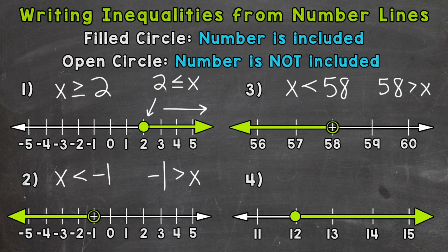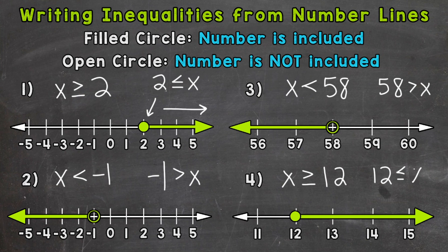And lastly, number four — we have a filled circle above 12, so 12 is going to be a solution. We have an arrow pointing to the right, so we want all of the numbers greater than 12 to be represented as solutions within our inequality. So we write x, and x is going to be greater than or equal to 12. Or we could say that 12 is less than or equal to x.